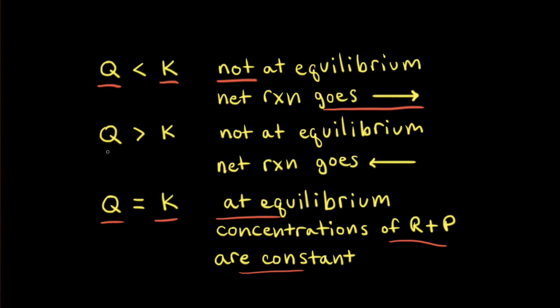It's also possible for Q to be greater than K. If that's true, the reaction is not at equilibrium — in this case, you have too many products and not enough reactants. Therefore, the net reaction goes to the left to increase the amount of reactants and decrease the amount of products, continuing until Q equals K and equilibrium is reached.